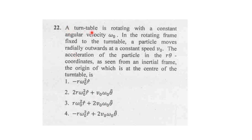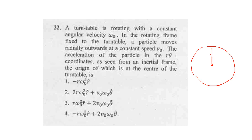Question number 22. A turntable is rotating with a constant angular velocity omega_0. In the rotating frame fixed to the turntable, a particle moves radially outward at a constant velocity v_0. The acceleration of the particle in the r-theta coordinate is seen from an inertial frame at the origin, that is the center of the turntable. The turntable is rotating, and the particle is moving radially outward with velocity v_0 while the turntable simultaneously rotates with constant angular velocity omega_0. They are asking what is the acceleration of the particle.